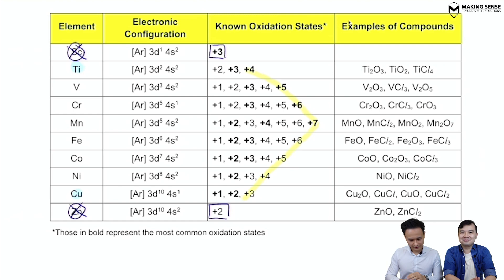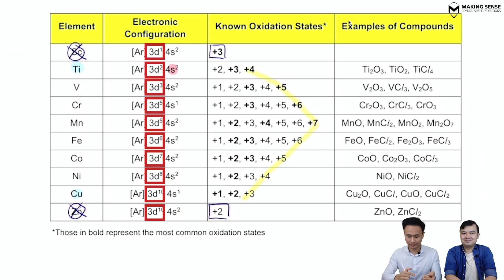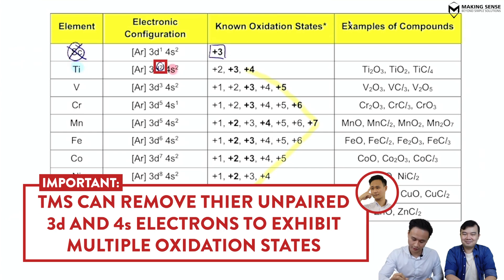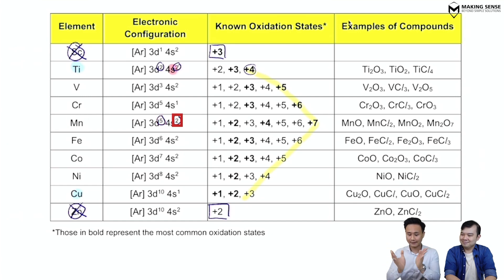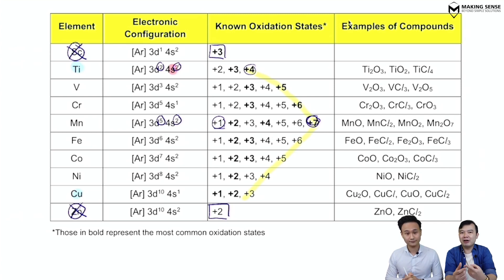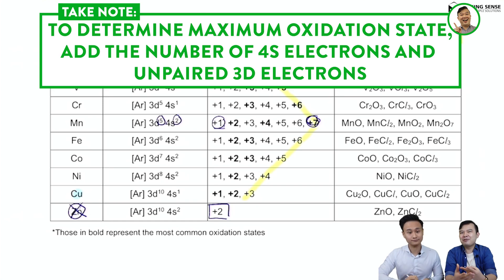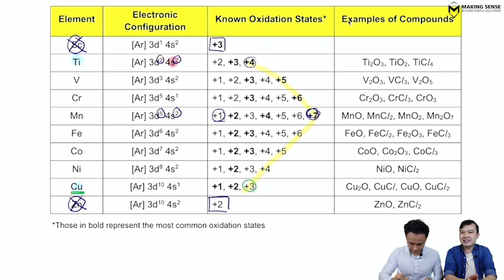For transition metals, when they lose electrons to form bonds, they use both their 4s electrons and the unpaired electrons in their 3d orbital. For titanium: 2 unpaired 3d electrons plus 2 from 4s gives a maximum oxidation state of +4. For manganese: 5 unpaired 3d electrons plus 2 from 4s gives a maximum OS of +7. Transition metals exhibit multiple oxidation states from +1 up to that maximum. Note that this rule doesn't work cleanly for copper, where the maximum would theoretically be +3, which is uncommon.